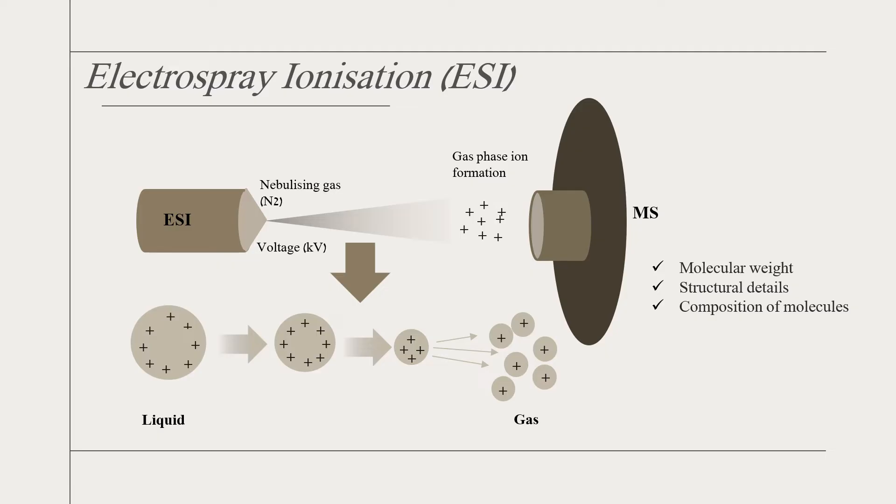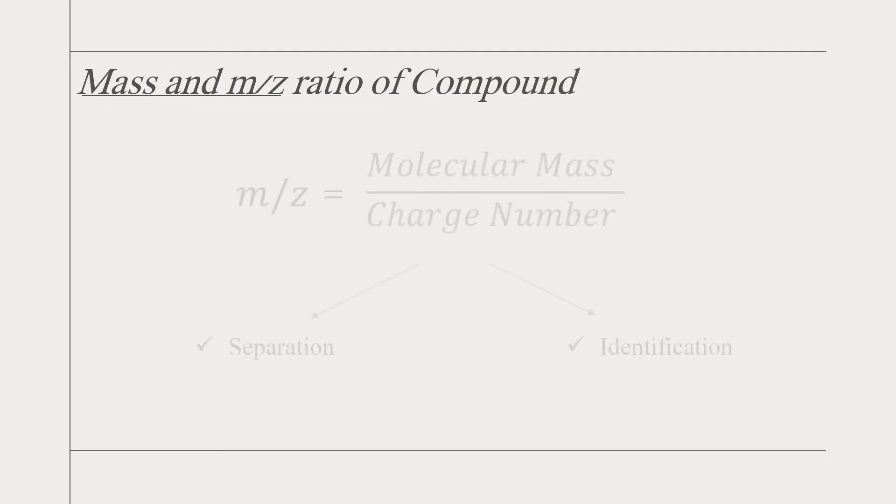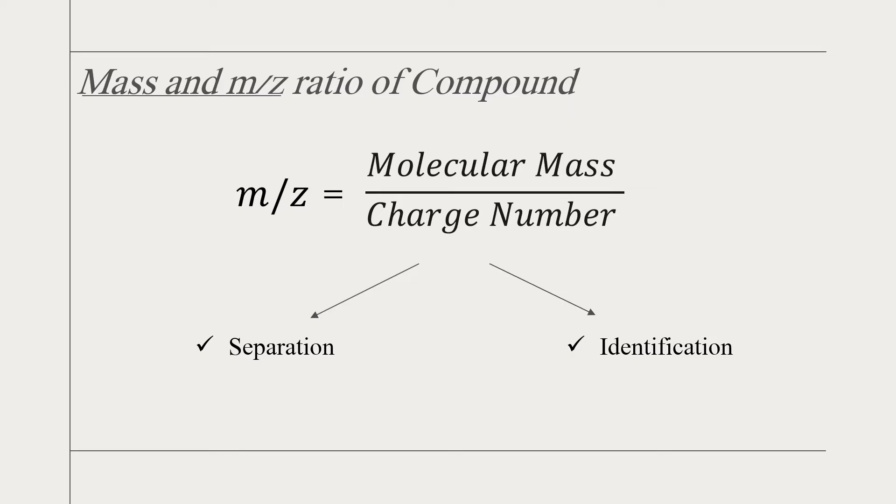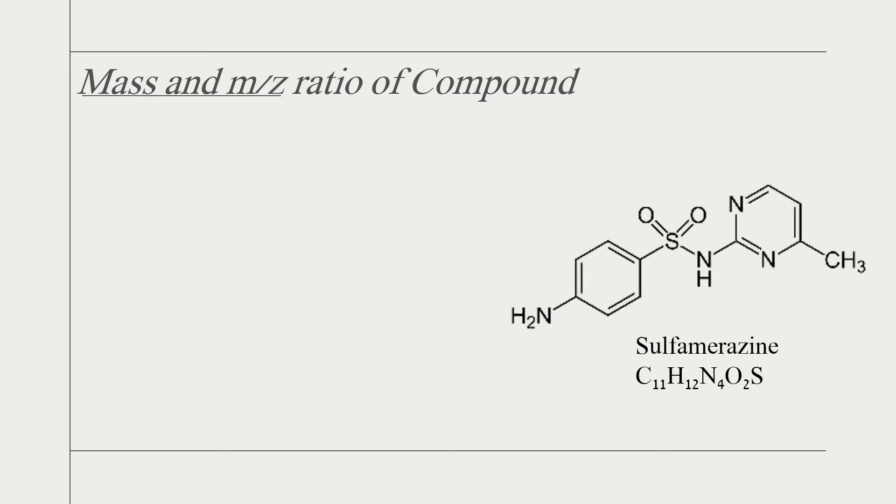A mass spectrometer measures the mass-to-charge ratio. The m/z ratio is an important identity for a molecule. Taking sulfamerazine as an example, an antibacterial agent with a mass of 264.1, it forms a protonated ion by adducting an H+ and becomes charge number +1. Therefore, its m/z ratio is 265.1.